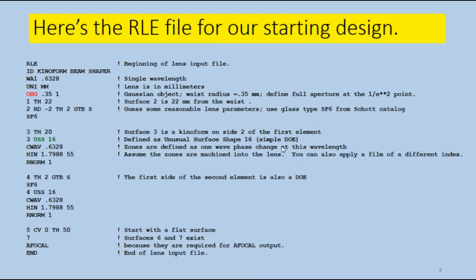Now, this is going to be the starting RLE file, and I'll walk you through it. One wavelength, which is the helium neon wavelength, units millimeters. And this is going to be using object type G, OBG, which you haven't used yet, which is the Gaussian input. This says the waist radius is 0.35 millimeters, and we're only going to look out to as far as 1 over the E squared point. Now, this kind of object always puts surface 1 at the waist. Let's suppose you want the first element 22 millimeters to the right, so we give it a thickness. Surface 2 is the first side of the first element. We give it a short radius because you want to expand the beam, and a glass type SF6, which is a nice high-index glass. And we give it a thickness of 20 millimeters, which puts the second element 20 millimeters to the right.